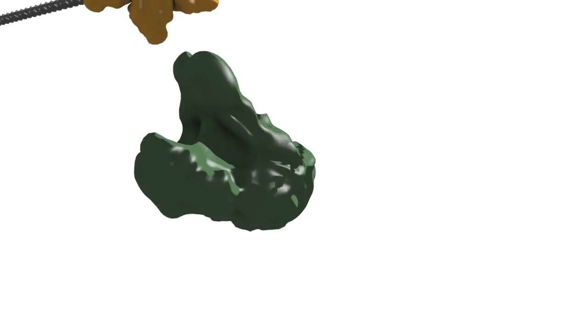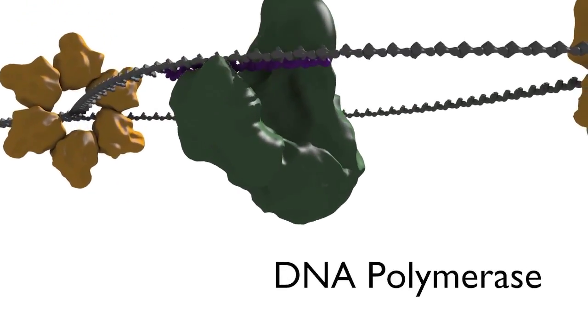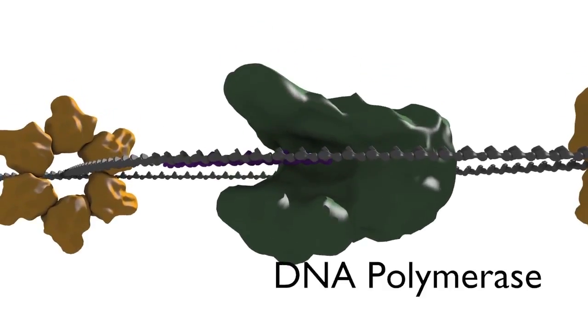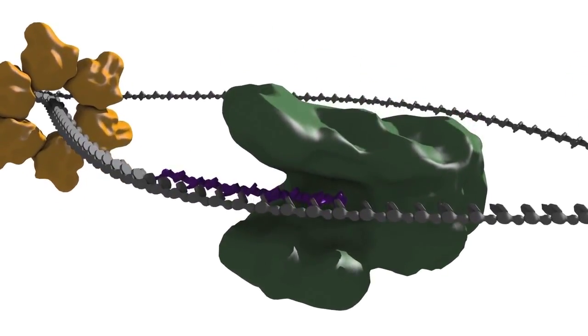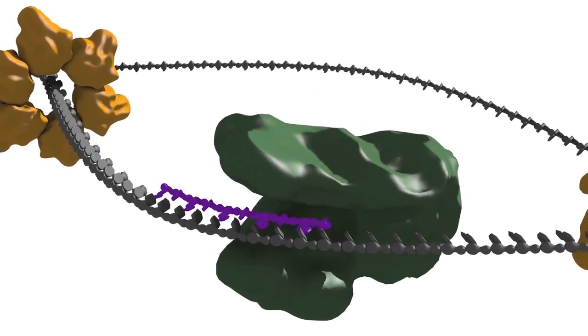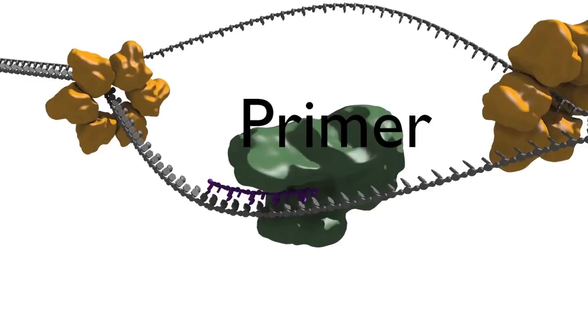The synthesis of DNA is catalyzed by an enzyme called DNA polymerase. However, DNA polymerases cannot start a new strand from scratch. Instead, they can only elongate an existing polymer of DNA or RNA. Consequently, a primer sequence needs to be made from which DNA polymerase can continue its synthesis.